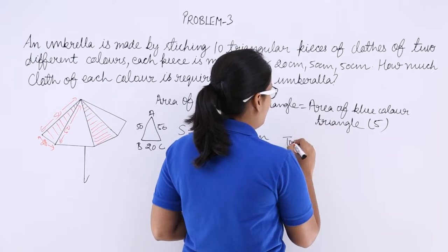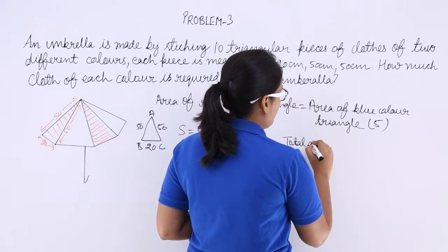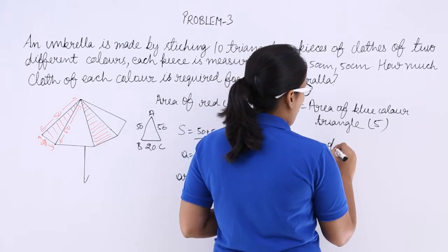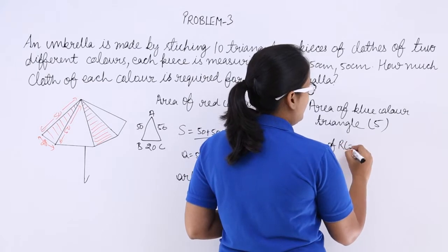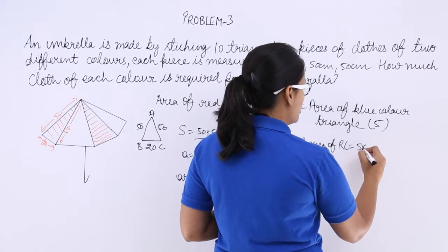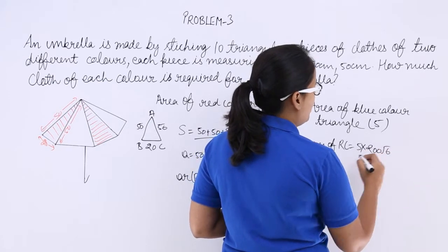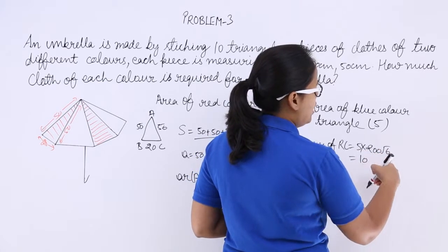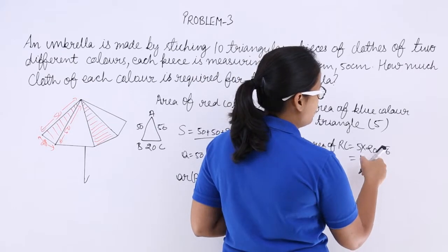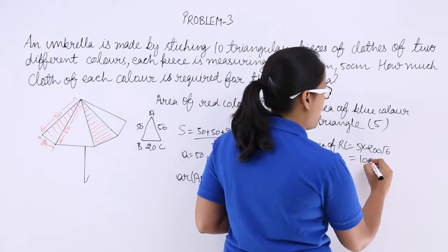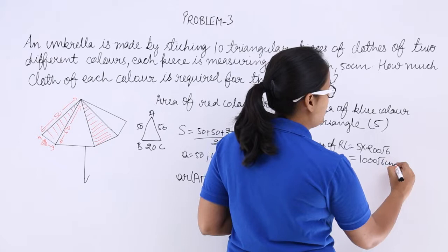So total area of red colored triangle will be 5 because there are 5 triangles, and the area of 1 triangle is 200√6. So 200 multiplied by 5 is 1000, 1000√6 centimeter square.